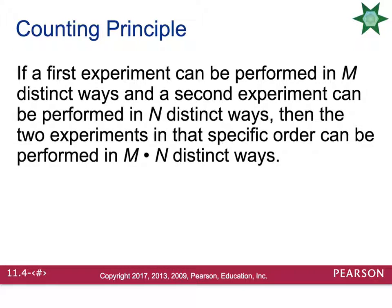The first rule is the counting principle. If a first experiment can be performed in m distinct ways and a second experiment can be performed in n distinct ways, then the two experiments in that specific order can be performed in m times n distinct ways. For example, if we flip a coin and roll a die, there are 2 ways a coin can land and 6 ways a die can land, so the combination is 12 different ways — you just multiply the two numbers together.